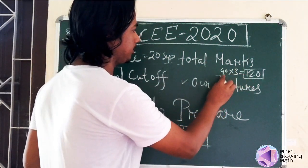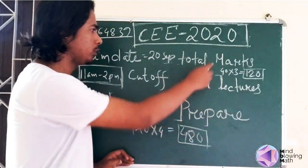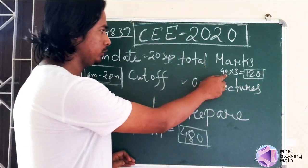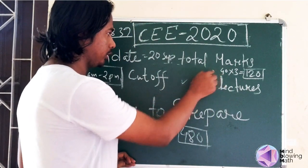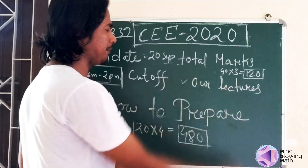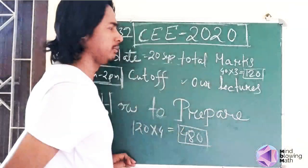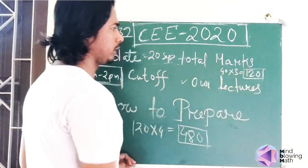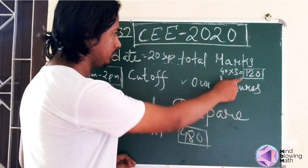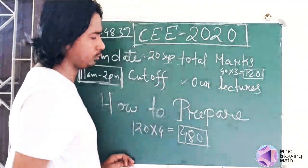There are 40 questions each for Mathematics, Chemistry, and Physics — 40 into 3, giving a total of 120 questions. At 4 marks each, that comes to 480 total marks.